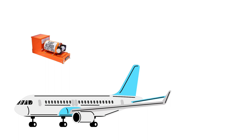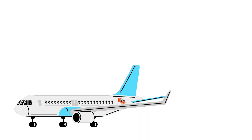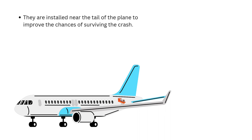These flight recorders are useful for every case, and no two aircraft accidents are the same, provided that these recorders survive the crash — and they usually do. They are installed near the tail of the plane to improve the chances of surviving the crash, because it is the last part of the plane to impact.